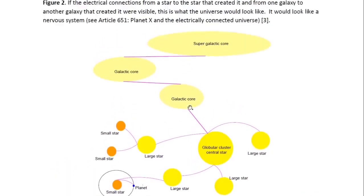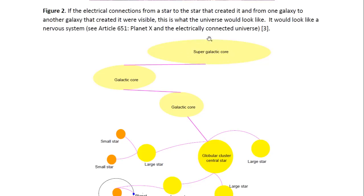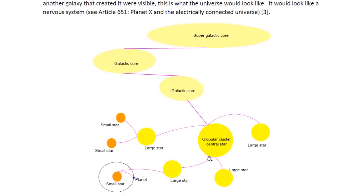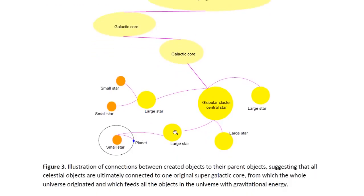By injecting energy into the supergalactic core, energy flows from it towards all the other objects in the universe. But it requires God to inject energy into it, so God sustains the whole universe. Each star sustains its daughter star or its son star. Each small star is sustained by its parent, just the way that God sustains the physical beings and the spiritual beings that he has created.